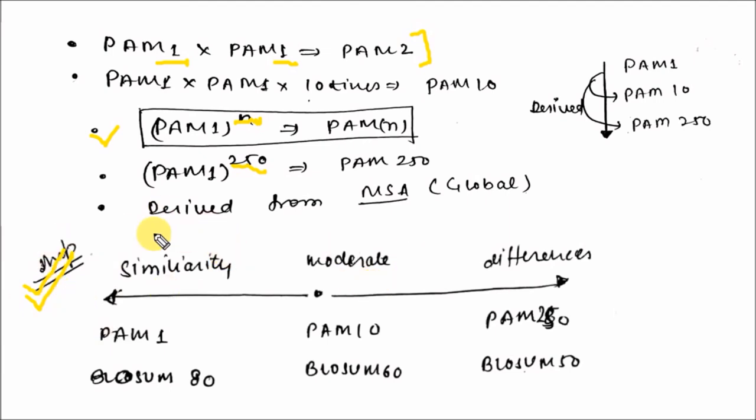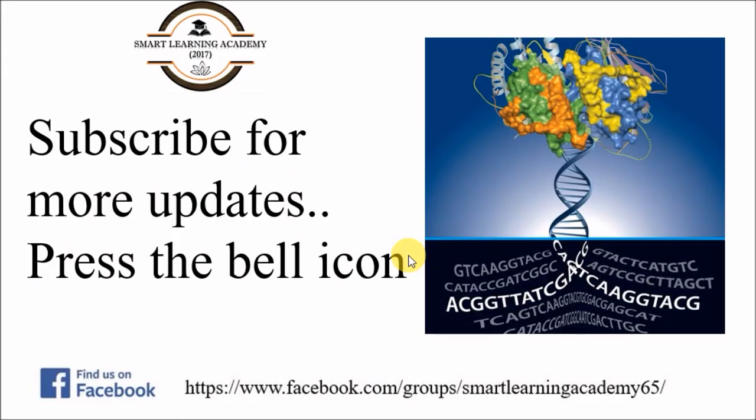When the similarity is high, then the number of PAM is low and the BLOSUM is high. For higher similarity, PAM 1 is used and BLOSUM 80 is used. For moderate similarity, PAM 10 is used and BLOSUM 60 is used. Higher differences or very low similarity, PAM 250 is used and BLOSUM 50 is used. You must remember this representation. This is very helpful for various examinations. Thank you for watching my video. Please do like and subscribe for more updates. Thank you.